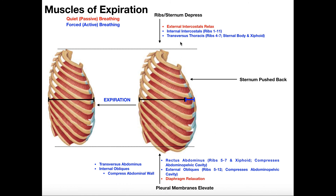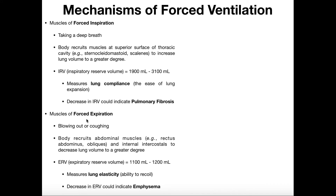The key with forced expiration is to recruit more muscles to get more force so you can exhale harder. With forced expiration, we can actually quantify this with an ERV — expiratory reserve volume, which we'll discuss in a later video. The ERV ranges between about 1,100 to 1,200 milliliters and doesn't vary as much as IRV.